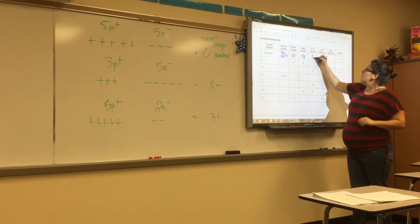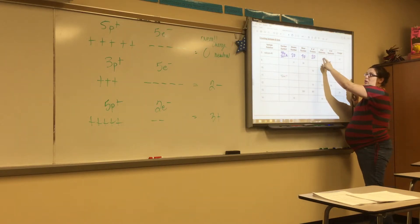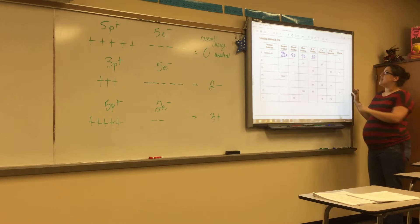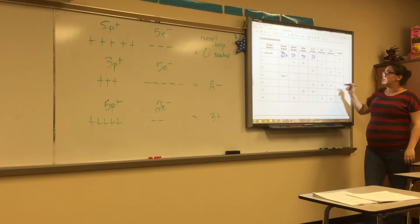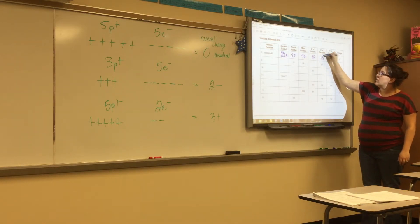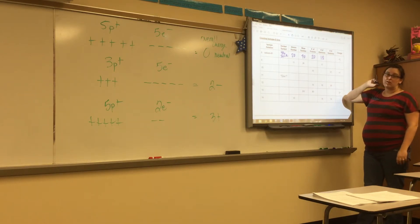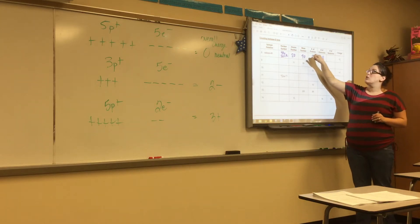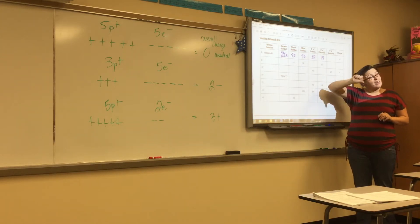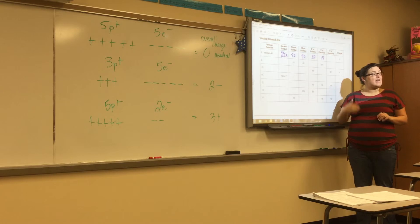Our number of electrons, though, we cannot assume that it's neutral now. Because, out here, if I have a 2 plus charge, that means I have 2 more protons than I have electrons. Well, if I have 20 protons, I have 18 electrons. It's deceiving because a lot of people see the plus 2, and they want to add 2 to your protons. But it's kind of opposite. We're really going to be taking away that number from our protons.